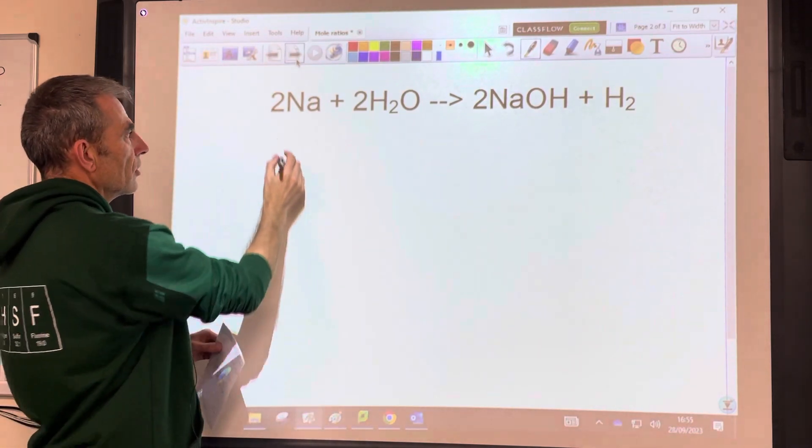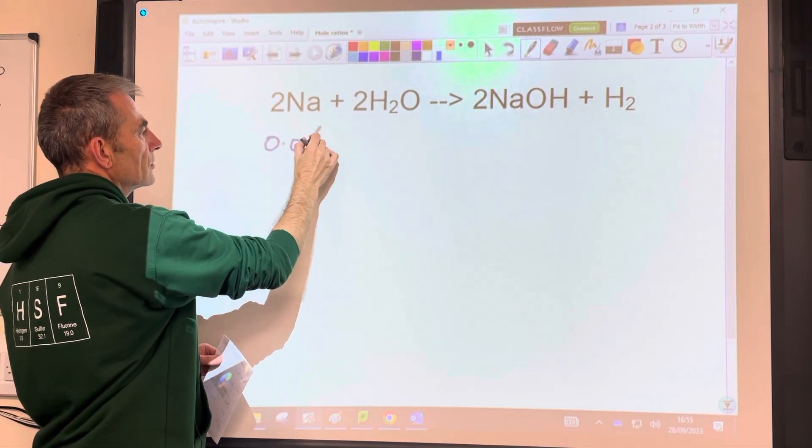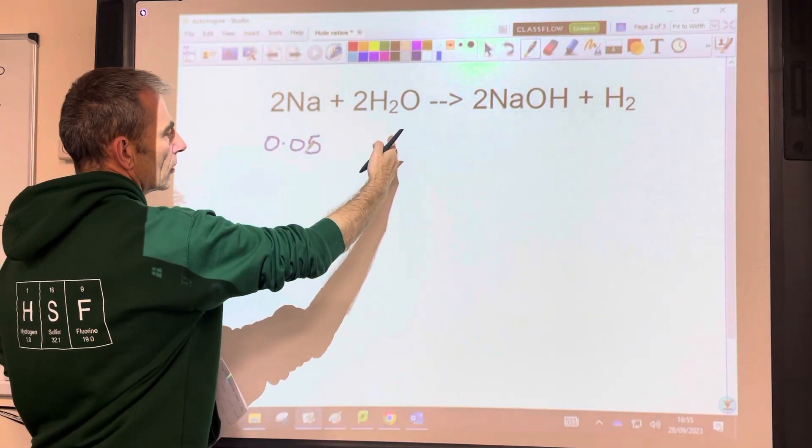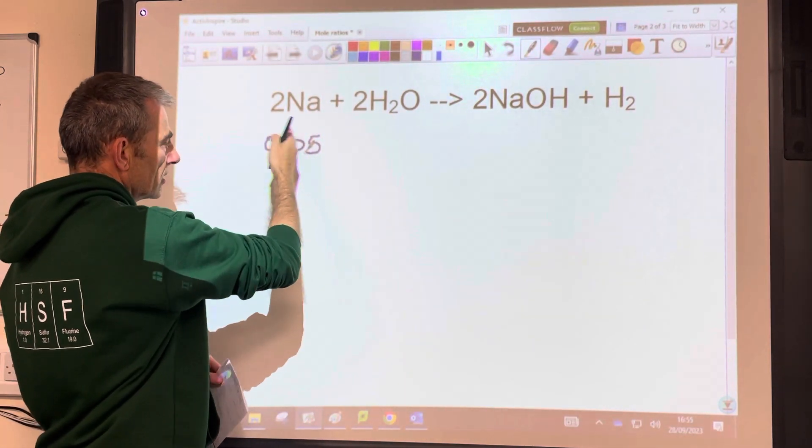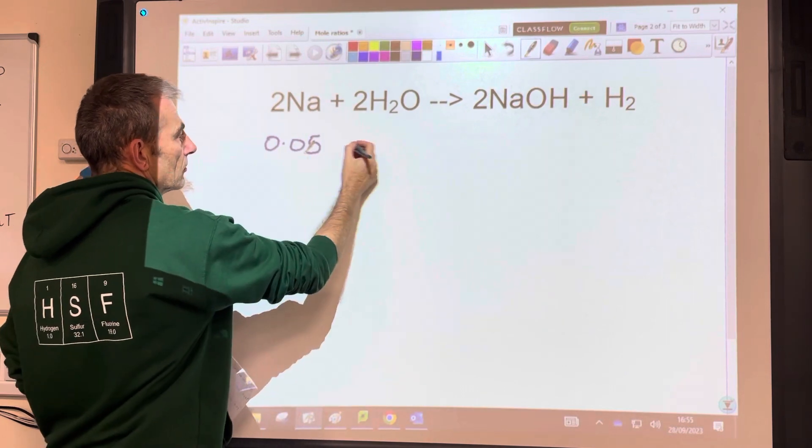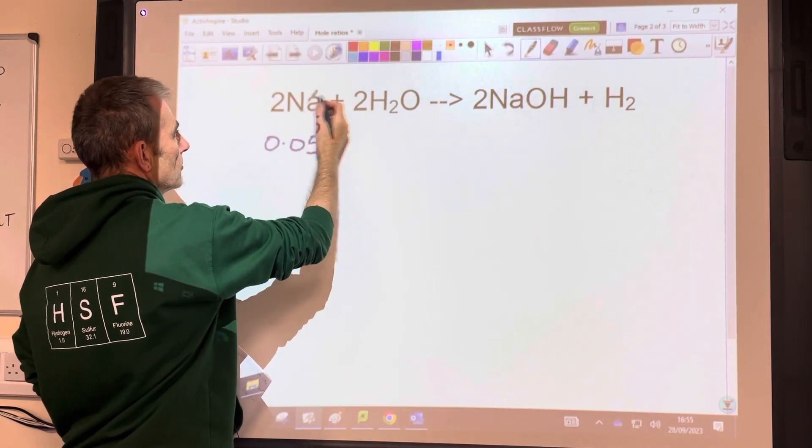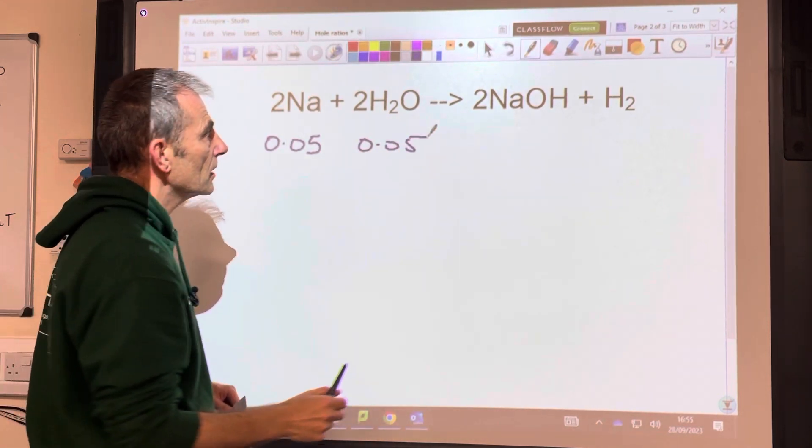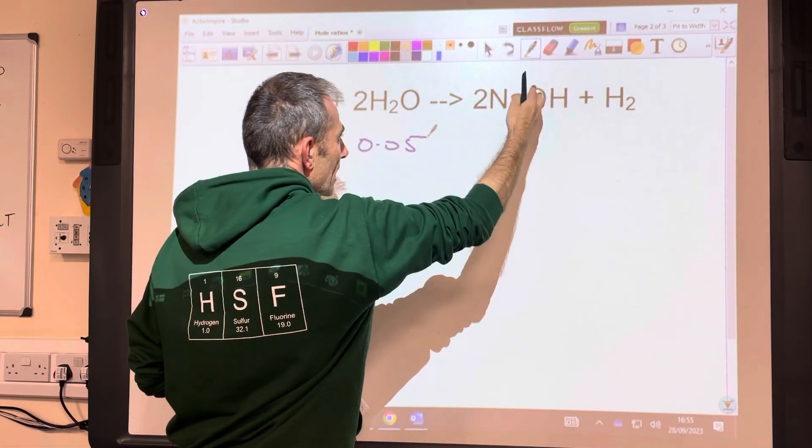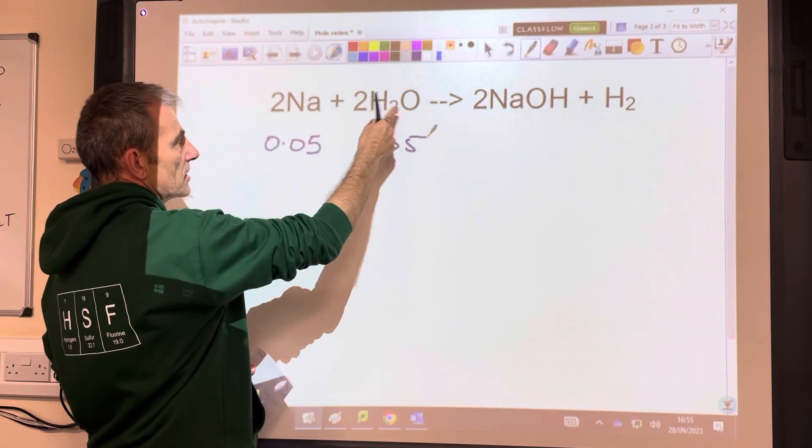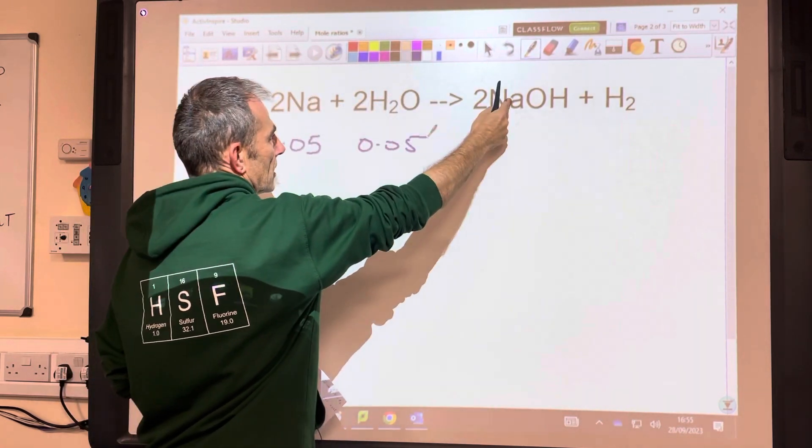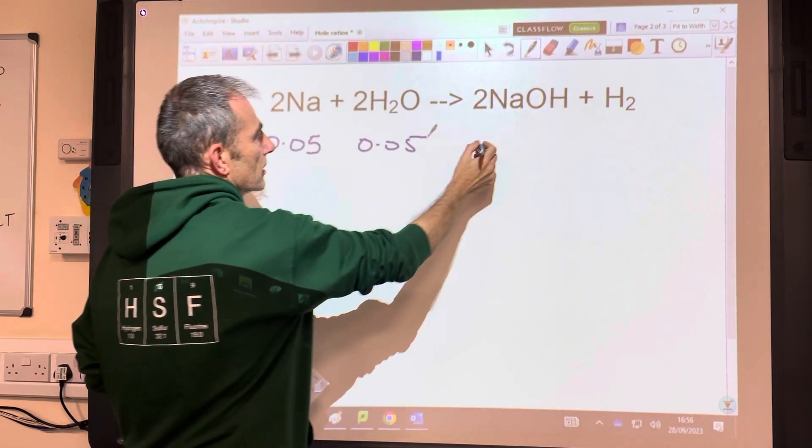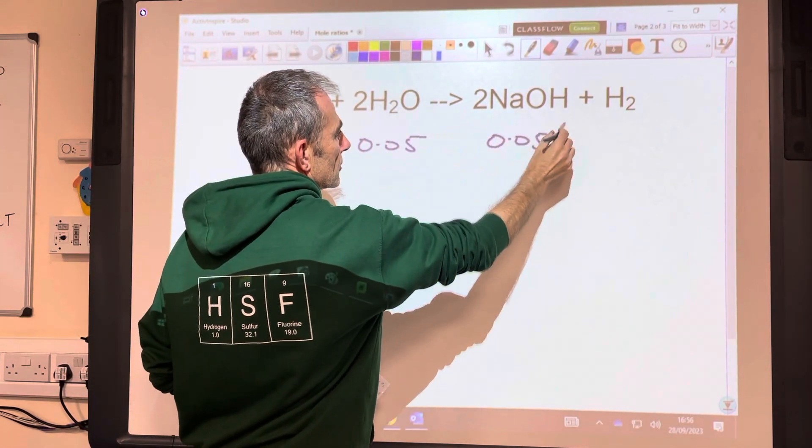So let's start with 0.05 moles of that. Let's suppose we've got 0.05 moles of that. How many moles of water would we need to react with that exactly? Well, it would be the same because we've got 2 to 2, which is a 1 to 1 ratio. So 0.05. How many moles of sodium hydroxide could you make from that? Well, you could use either of these ratios, that to that or that to that. It's the same, so it's 1 to 1 effectively. So we'd make 0.05 moles of that.